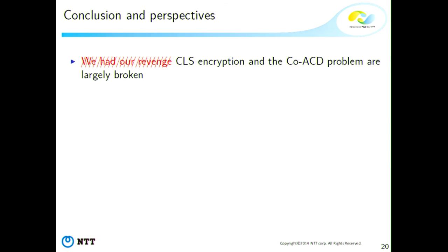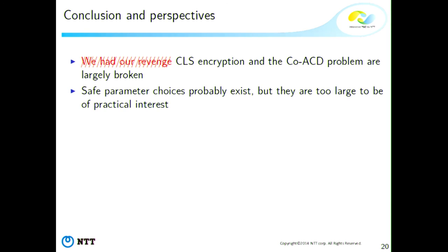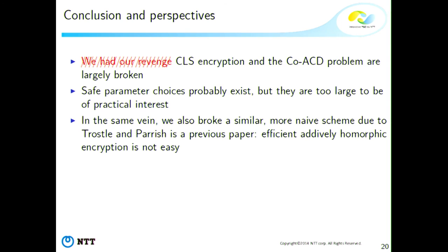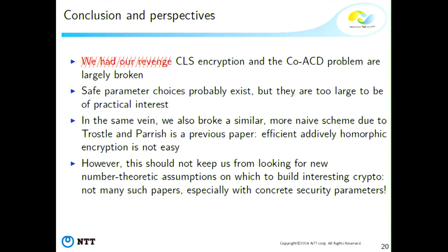To conclude: CLS encryption and the co-ACD problem are essentially broken. You can still find safe parameter choices that resist these attacks, but they are too large to be of much practical interest. This work came after another paper where we broke a more naive additively homomorphic scheme by those same authors, which also claimed to be very efficient but was very insecure. It seems this is a pretty hard problem to solve, but that shouldn't keep us from looking for new interesting assumptions — we don't have so many papers recently that introduce new assumptions, give security parameters, and provide work for cryptanalysts.